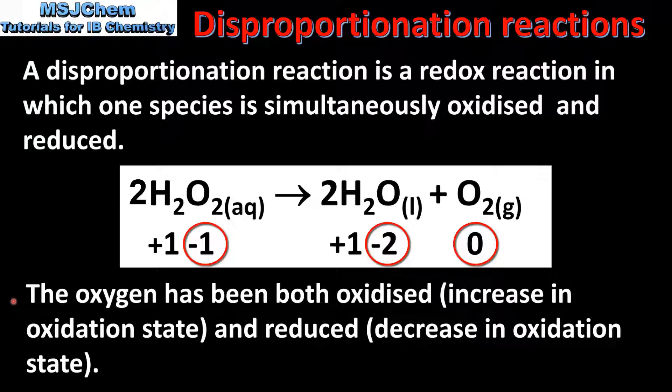So the oxygen has been both oxidized, which is an increase in oxidation state, and reduced, which is a decrease in oxidation state. Therefore, this is an example of a disproportionation reaction.